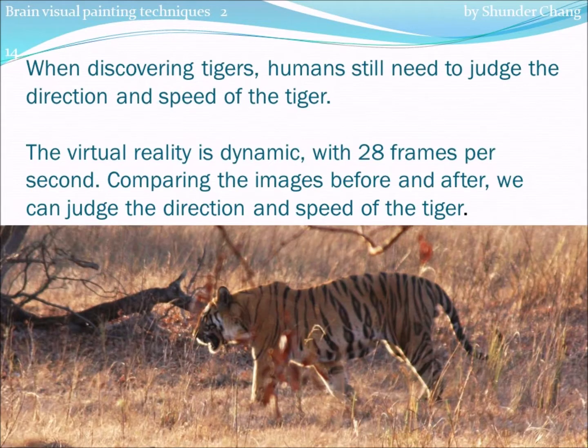When discovering tigers, humans still need to judge the direction and speed of the tiger. The virtual reality is dynamic, with 28 frames per second. Comparing the images before and after, we can judge the direction and speed of the tiger.